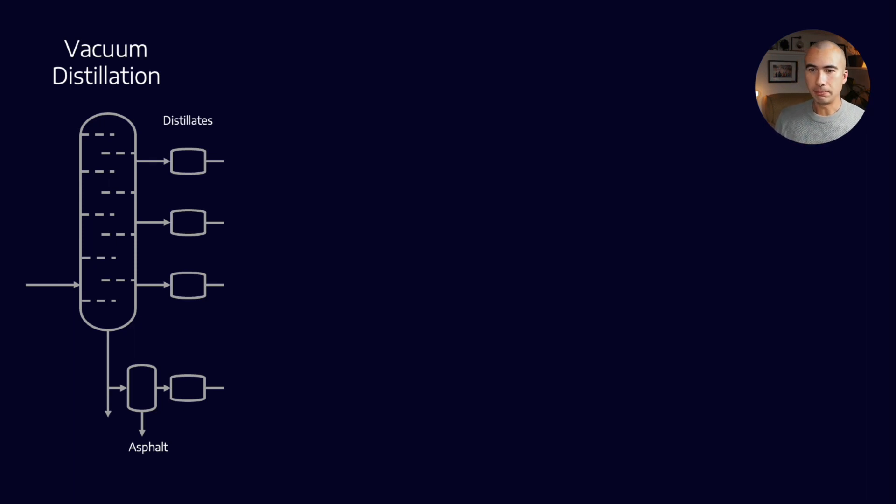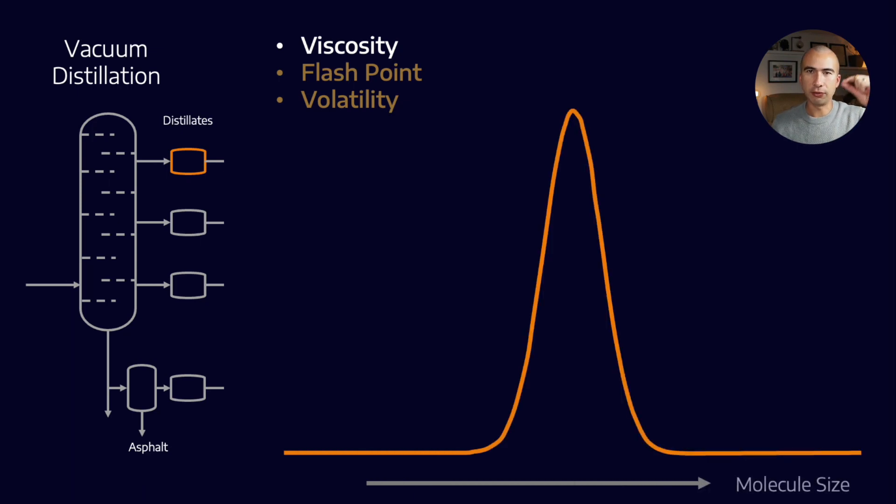Now, let's talk about some of these processes in a little bit more detail. With vacuum distillation, for example, what we're fixing is the viscosity, the flashpoint, and the volatility. We're doing this because each of the different cuts has a different molecular distribution. At the high end, we have a mean where that peak is on molecular size.